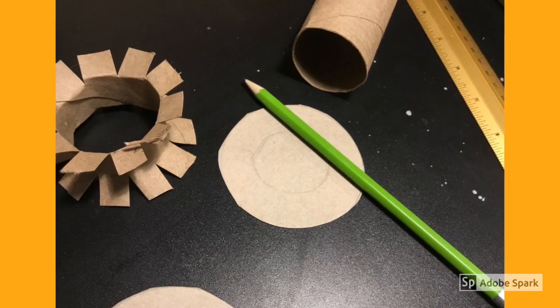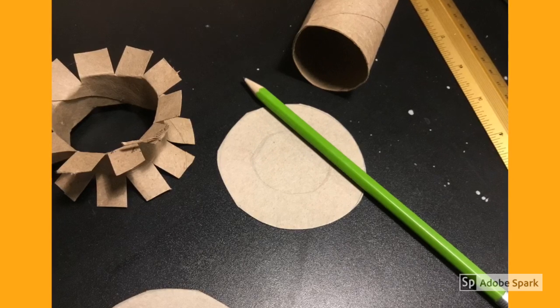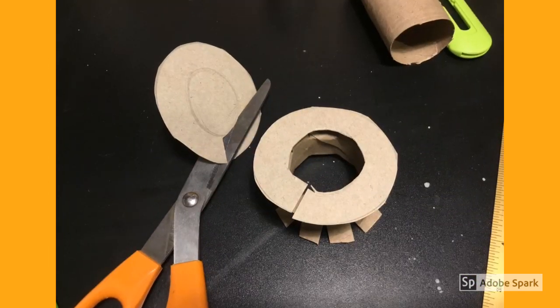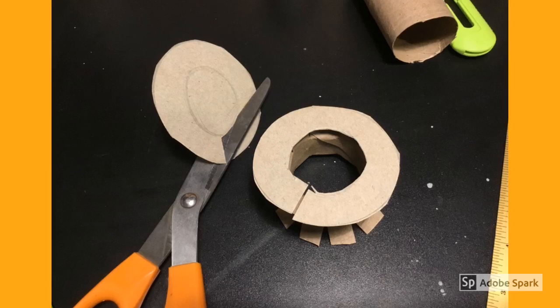Using the small cylinder, trace the inner circle onto each disc. Cut out the inner circle on each disc that you just traced.